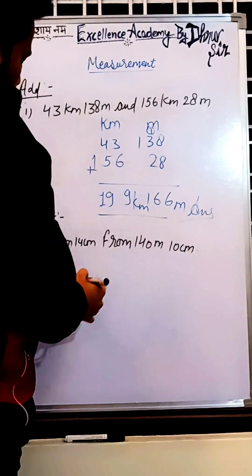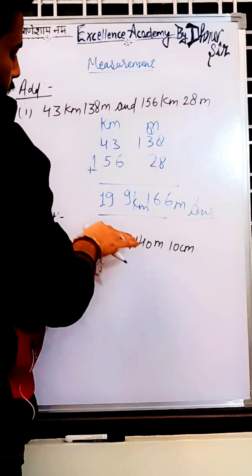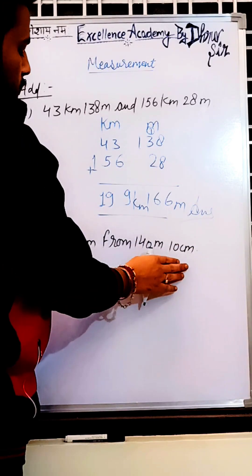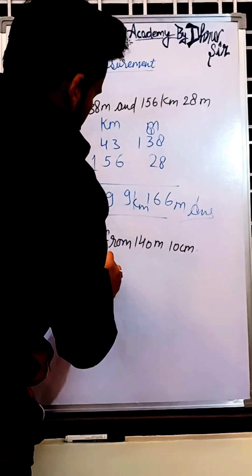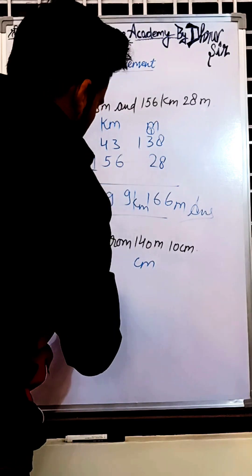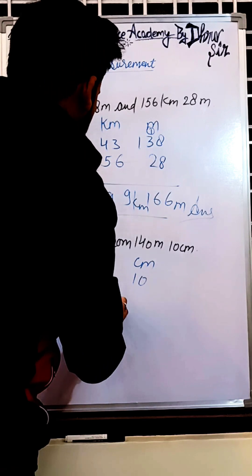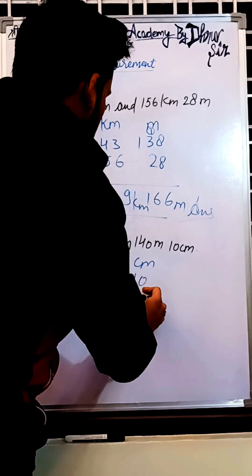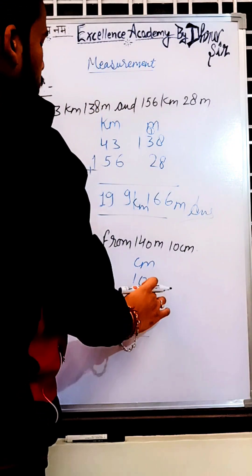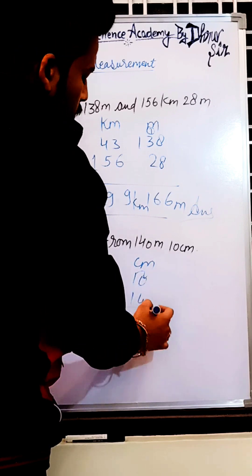The second question is a subtraction. We have to set up the columns: meter and centimeter. We write 140 meter 10 centimeter, and we subtract 53 meter 14 centimeter. Starting from the centimeter column: 0 minus 4 is not possible, so we borrow — 10 minus 4 equals 6.